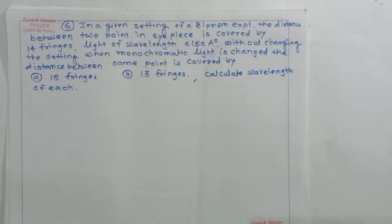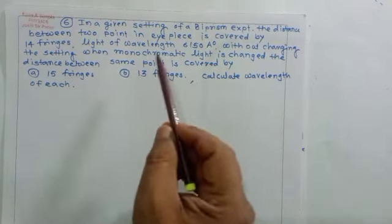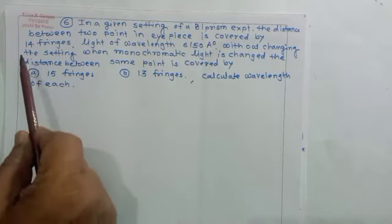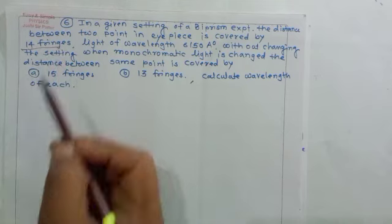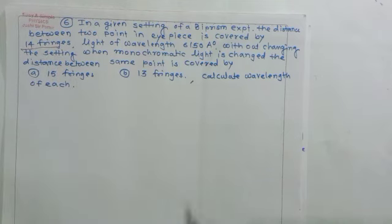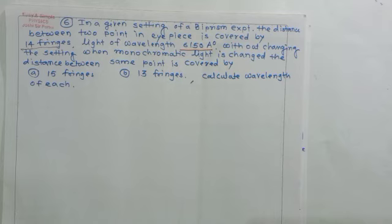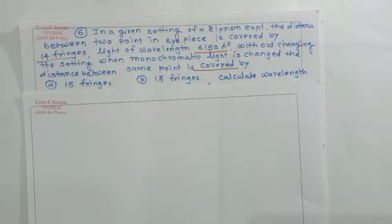In a given setting of the biprism experiment, the same distance is covered by 14 fringes of light with wavelength 6150 angstrom units. We can find two wavelengths of other lights — one when 15 fringes cover the same distance, and another when 13 fringes cover the same distance. Let us write the given data.